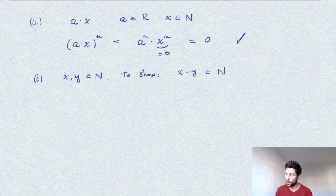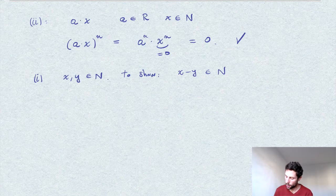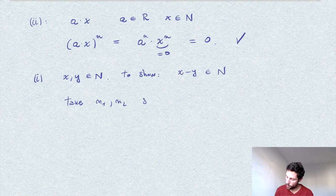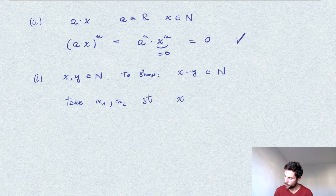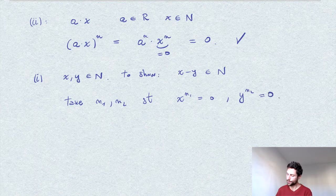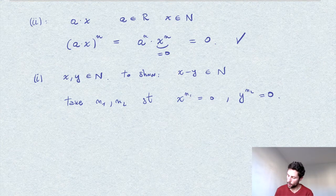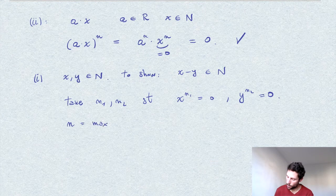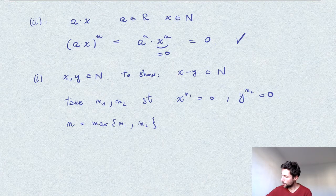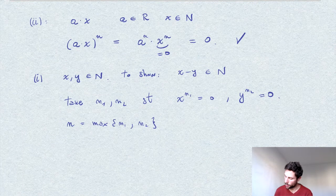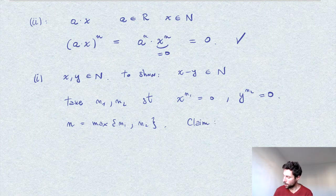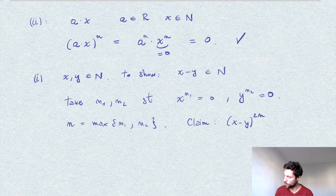Let me take n1 and n2 such that x to the power n1 equals zero and y to the power n2 equals zero. I take the exponent big enough, so I consider n to be the maximum between n1 and n2. I claim that (x minus y) to the power 2n equals zero.